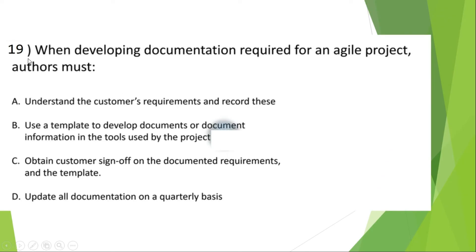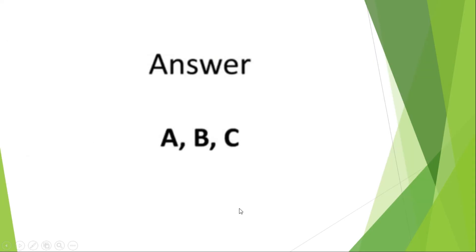Nineteenth question: when developing documentation required for an agile project, you must: Option A: understand the customer requirements and record this. Option B: use a template to develop documents or document information in the tools used by the project. Option C: obtain customer sign-off on the document requirements and template. Option D: update all documentation on a quarterly basis. The right answer will be A, B and C.